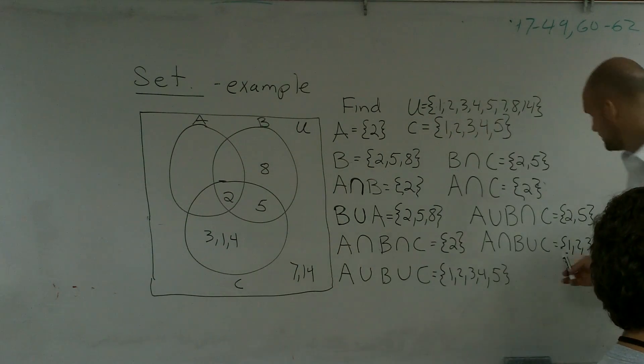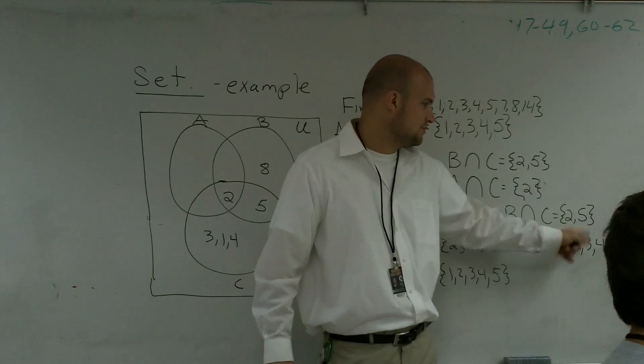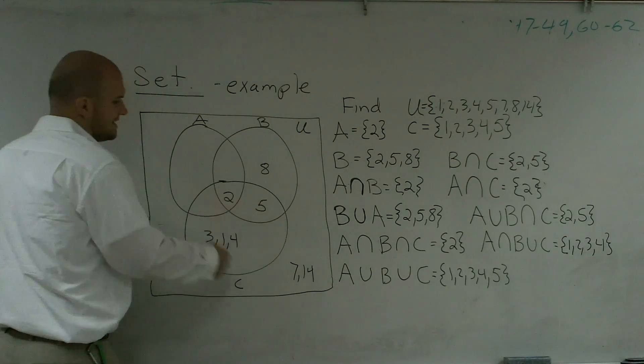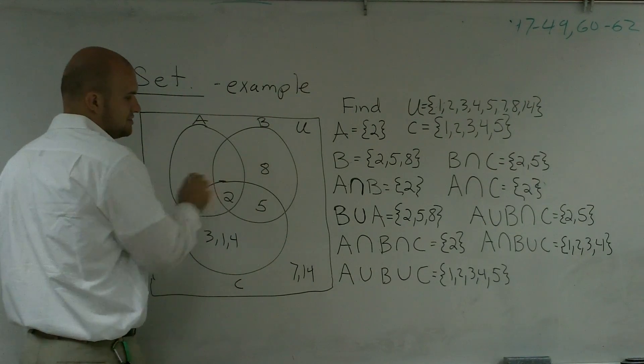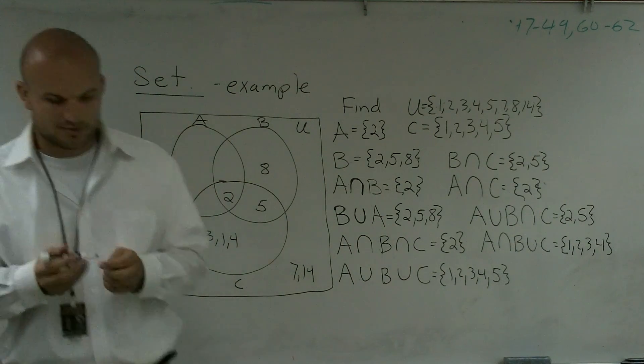So my final set would be, so A intersect B union C would be 1, 2, 3, and 4. It's everything that's in C plus the intersection between A and B, which is 2. So that is how you find sets when you have three circles.